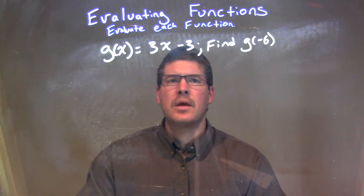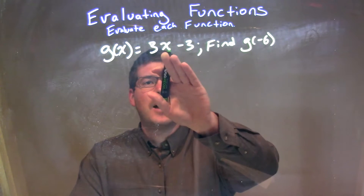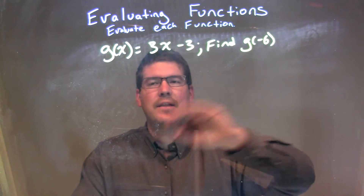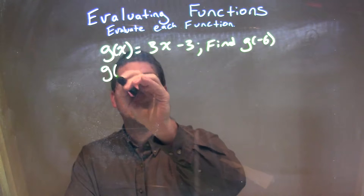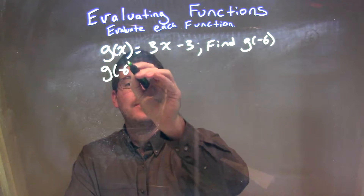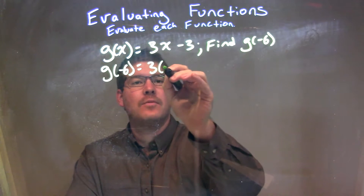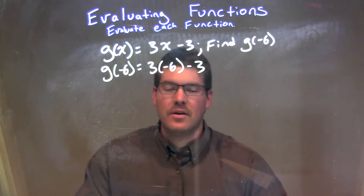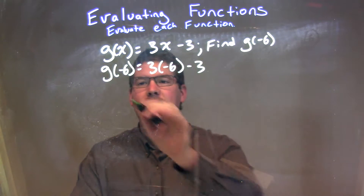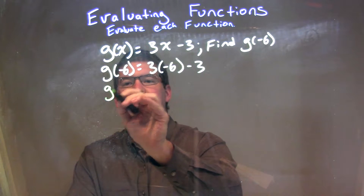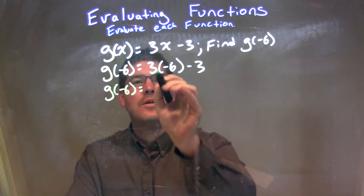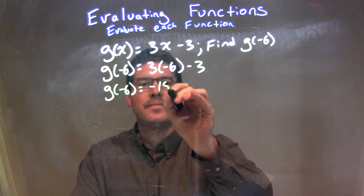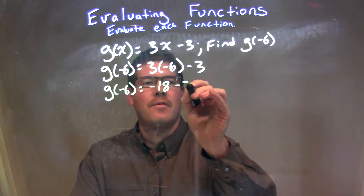Well, what I'm going to do is every single time I see an x, I'm going to plug in a negative 6. That's what that's asking. So, g of negative 6 here is equal to 3 times the negative 6 minus 3. So, now it's just time to simplify. g of negative 6 comes down. 3 times negative 6 is a negative 18, we're going to get a minus 3.